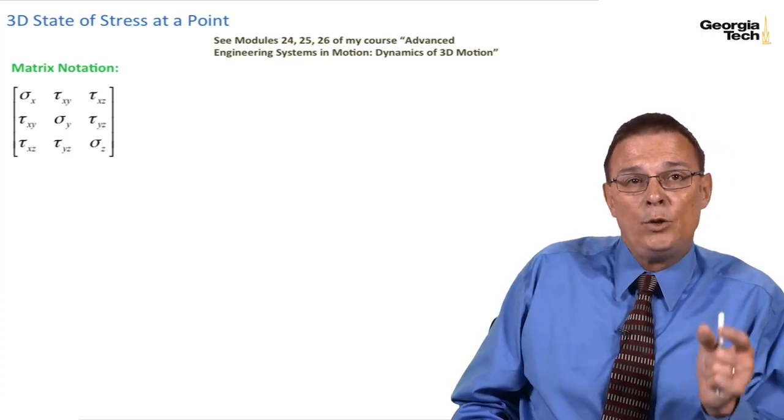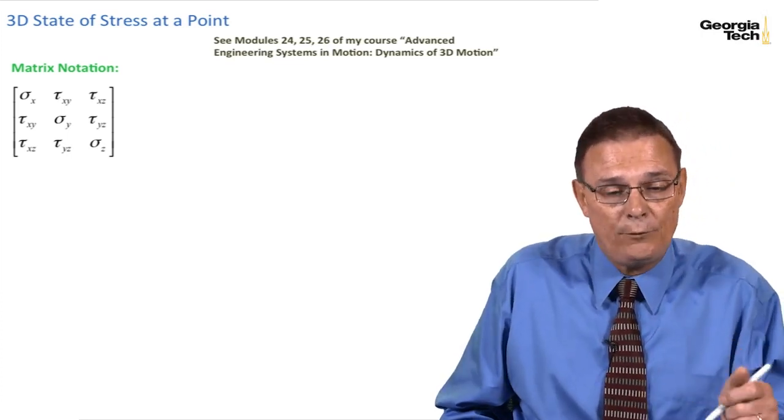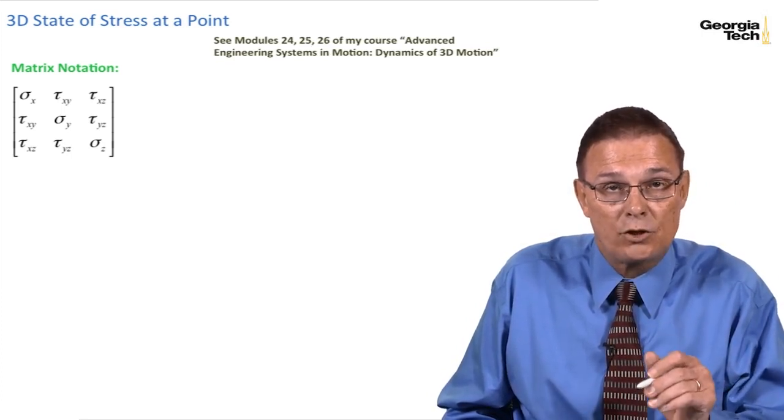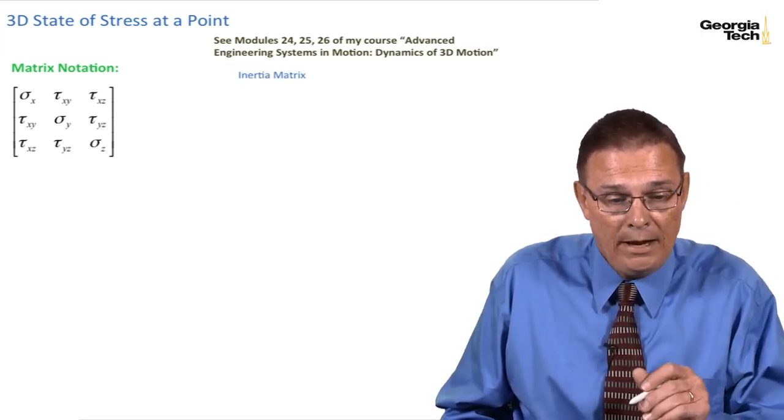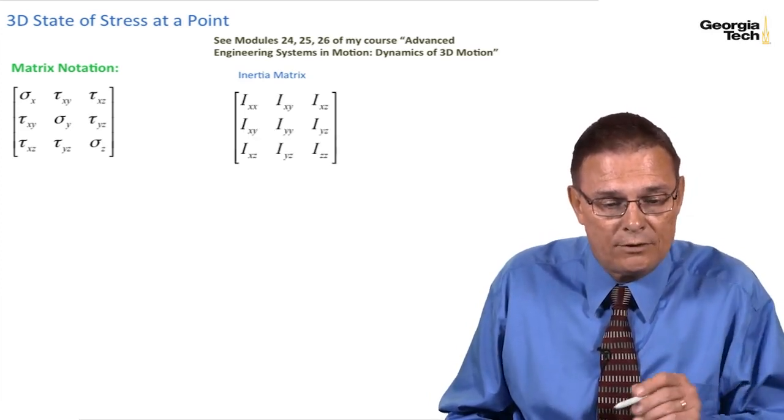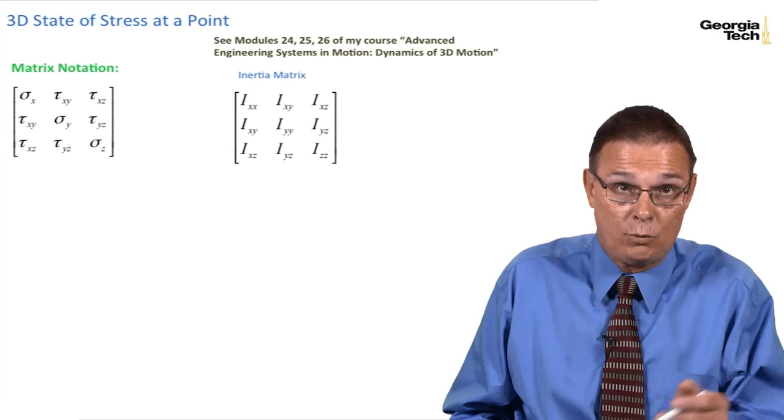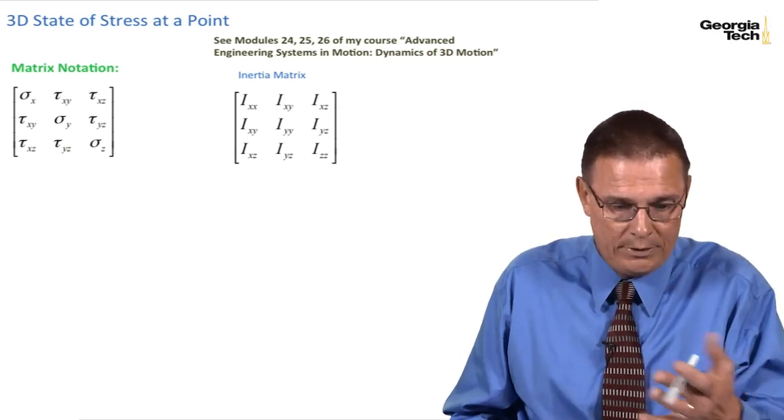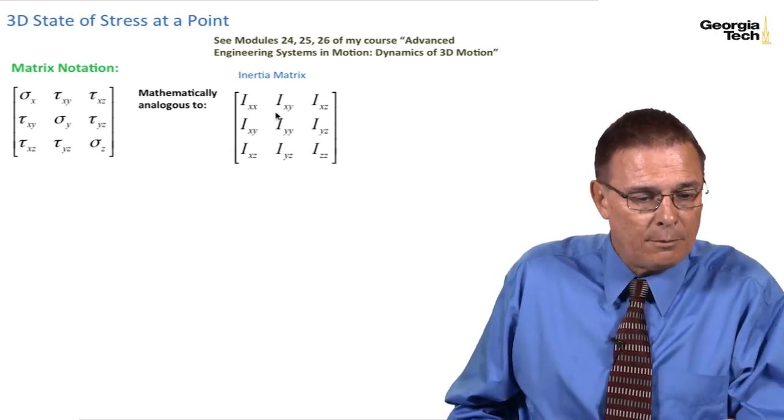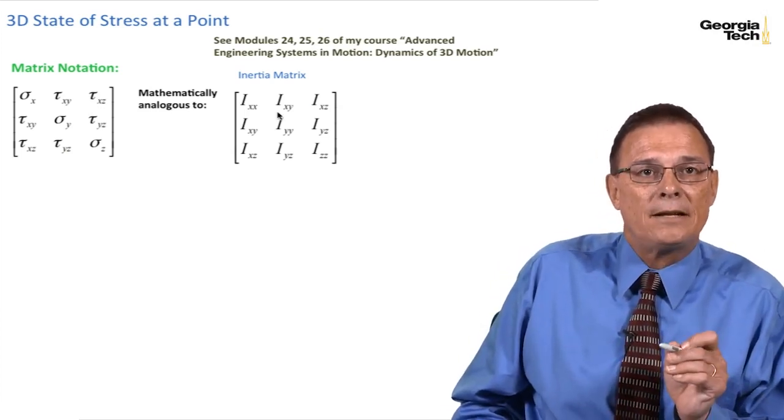What I'd like you to do now is to go back and review modules 24, 25, and 26 of my advanced course on three-dimensional dynamic motion. And in those series of modules, we looked at something called the inertia matrix, which was also a tensor representing physical quantities with an array of numbers. And so these are completely mathematically analogous.